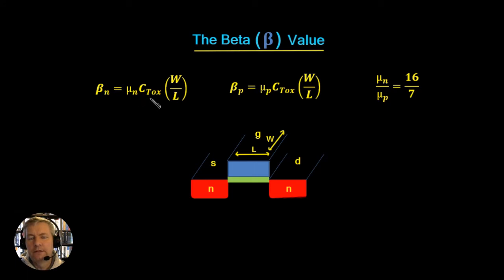Now the thing that's of interest here for the designer is this W upon L, the width upon length. Here are the values for the width and the length. We have the channel, which is our inversion channel that sits below the oxide layer. The length is the distance from the N-type material to this N-type material. The width is actually the width, or if you like, the depth of the device.